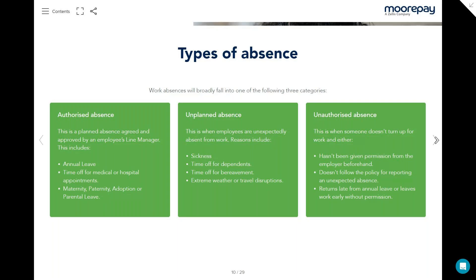Broadly speaking, absence falls into the following three categories. Authorised absences — where it's been agreed prior to taking that time off with your manager, whether that's annual leave, time off for medical appointments, maternity, paternity, that type of thing. It's also important to make sure you do have processes in place for that as well, so do they book annual leave through a system. Failing that, could it then result in unauthorised absence? So making sure we have clear processes in place in terms of what results in authorised absence is a main focus.